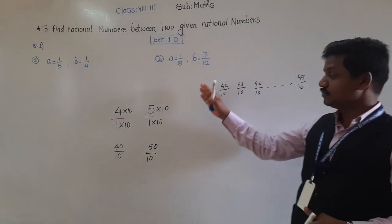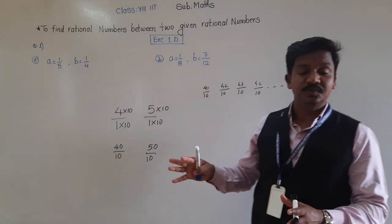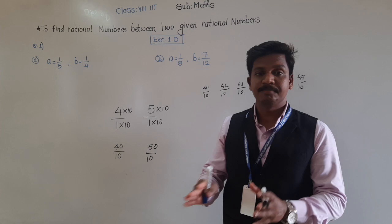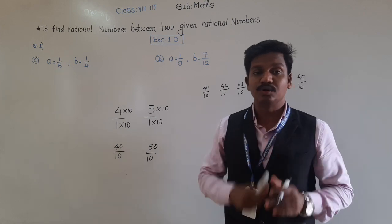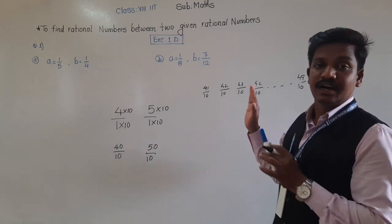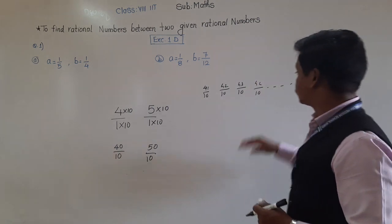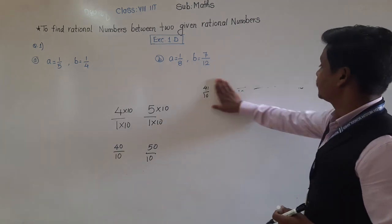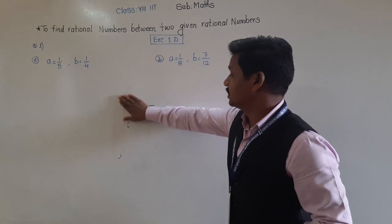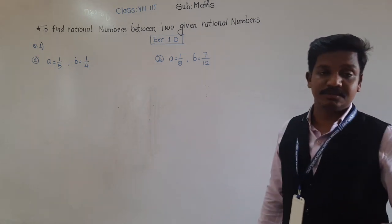We have just found 10 rational numbers, but we can find uncountably many rational numbers between any two given rational numbers. So today we are going to learn how to find rational numbers between two given distinct rational numbers.